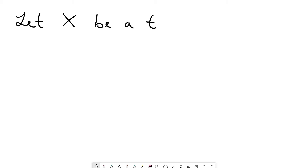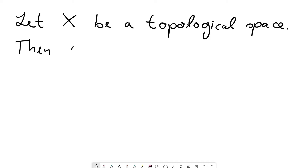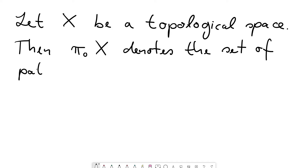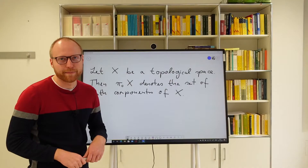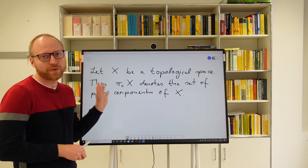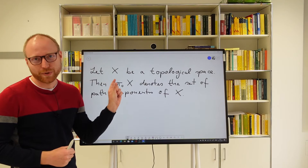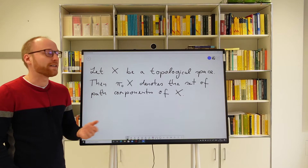So let X be a topological space. We denote by π₀ of X just the set of path components of the space. This terminology is no coincidence: π₁ was the fundamental group, which is sort of embeddings of circles up to filling them with disks. So this is embeddings as zeros — two points in the space up to connecting them by a path — which is exactly why this corresponds to the path components of the space.